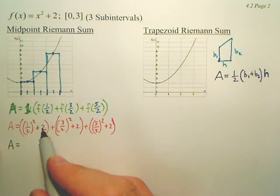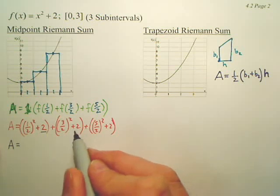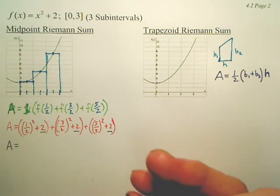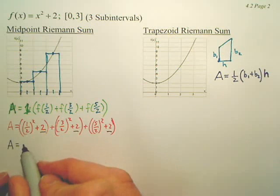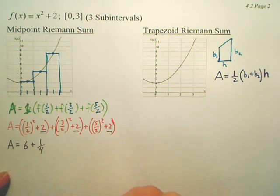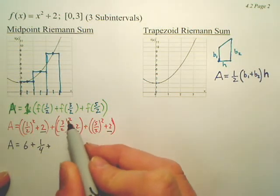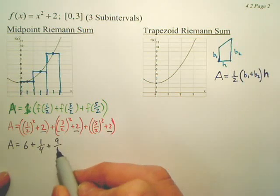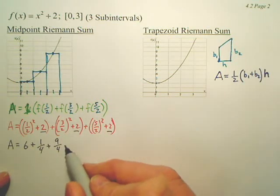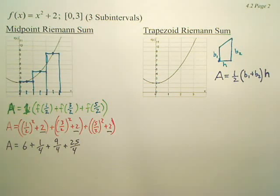1 fourth plus 2. Actually, can we ignore these 2s? Can we just go 2 plus 2 plus 2 and put 6? Out of all those, we have 6. So what's 1 half squared? That would be 1 fourth. Plus 3 half squared, that's 9 fourths. And then plus 25 fourths.